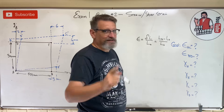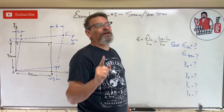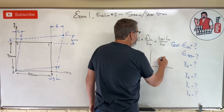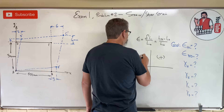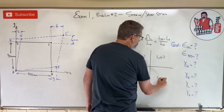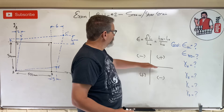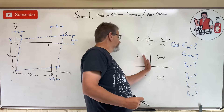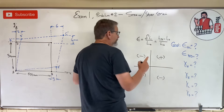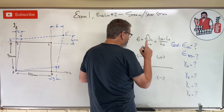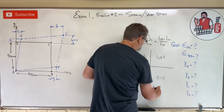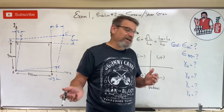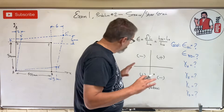Don't cheat — push pause, work the problem, and only watch this after you finish or get stuck. We have a sign convention: if a corner moves into quadrant one or three it's positive, quadrant two or four it's negative. The answer is in radians — you can work in degrees but convert back to radians at the end.